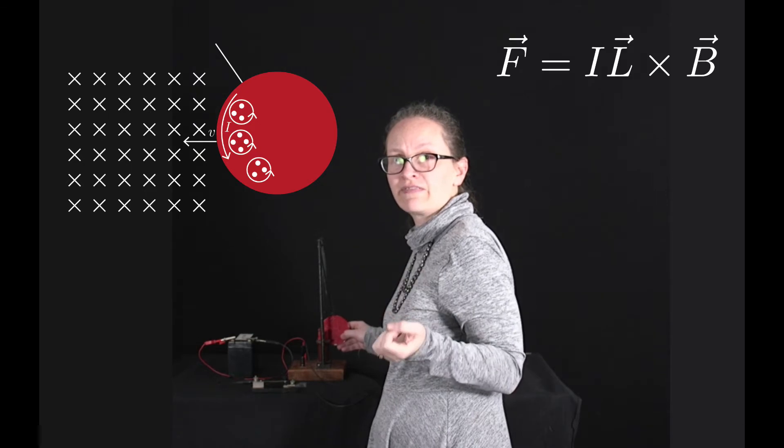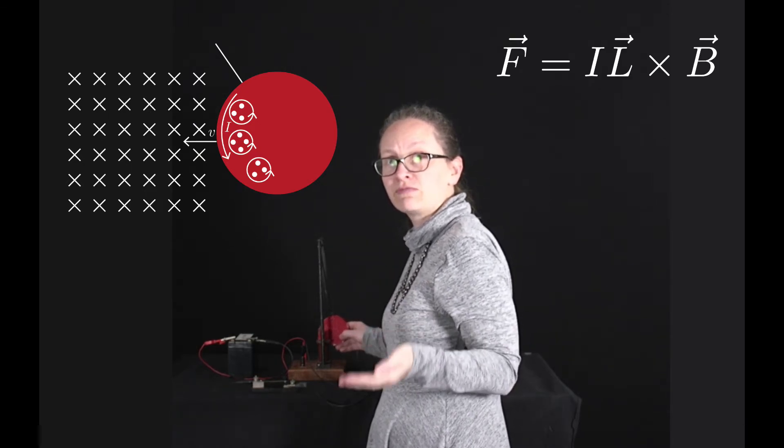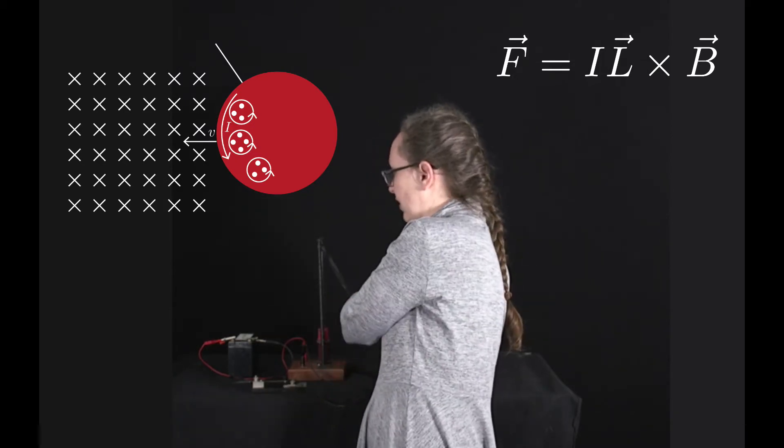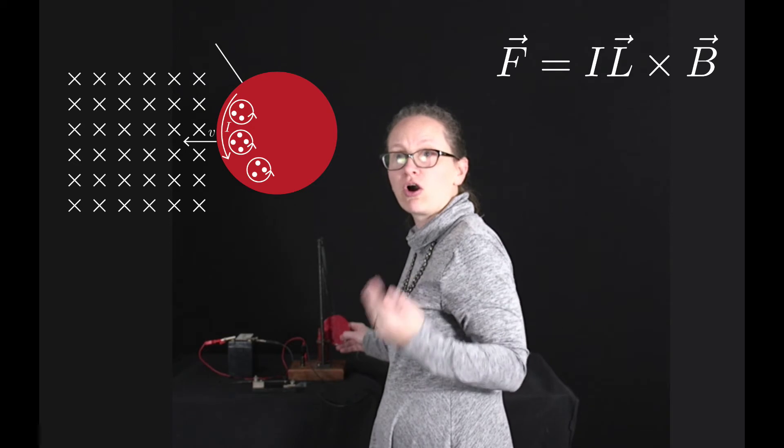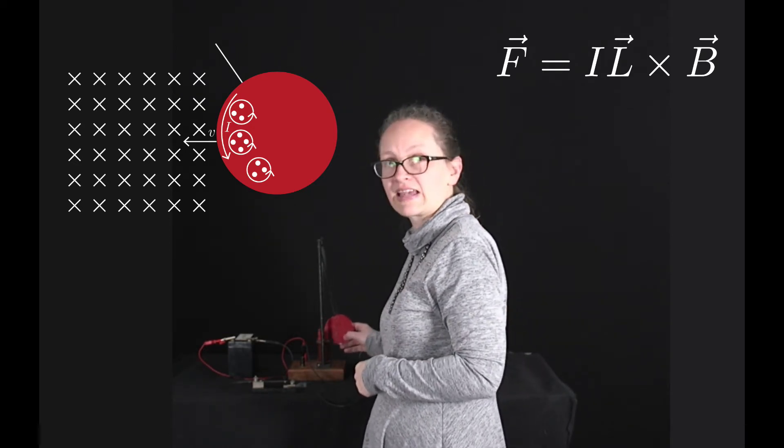If we now use the right-hand rule and consider our equation F is equal to IL cross B, you can see that there's going to be a force in this case and that that force is going to be back away from the magnets, so in the opposite direction to the velocity. And so this is going to slow the metal plate down.